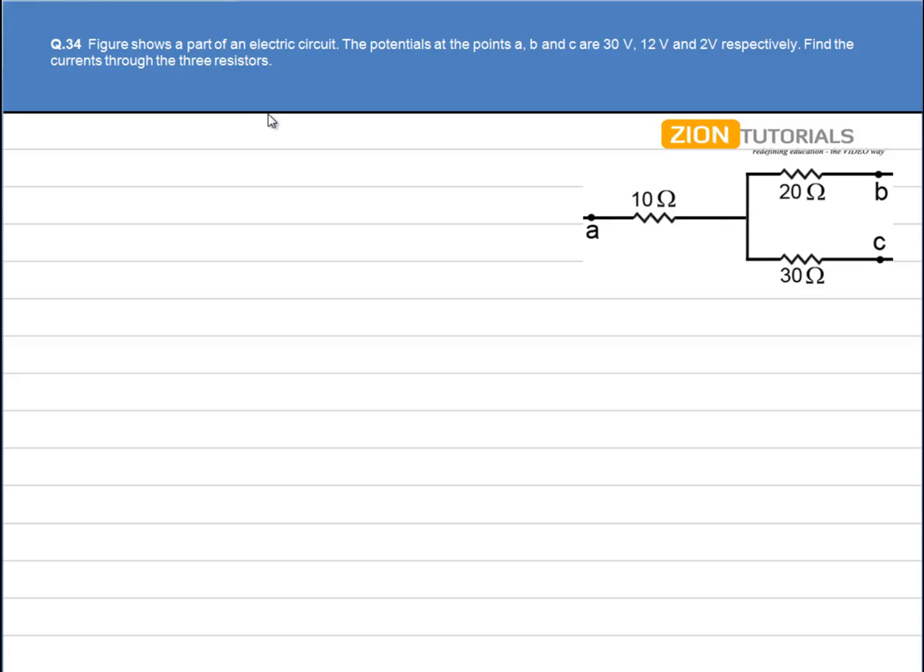We have a circuit shown in the figure. The potentials at points A, B, and C are given as potential at A is 30V, potential at B is 12V, and potential at C is 2V.